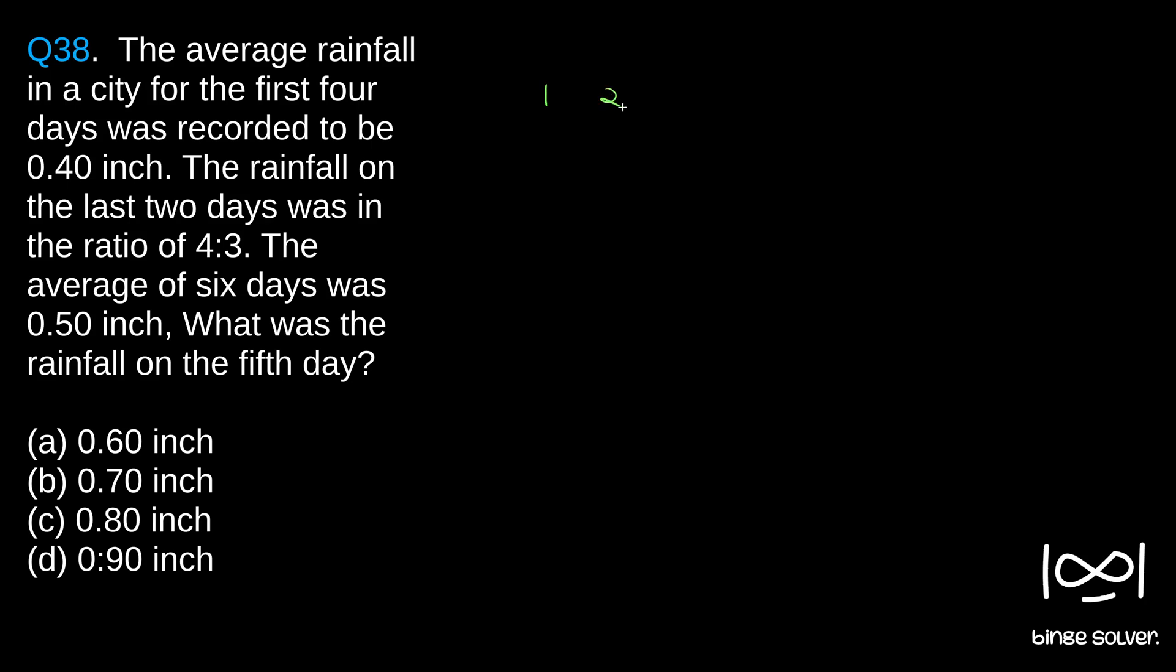So we have six days: 1, 2, 3, 4, 5, 6. The average rainfall in the first four days was given as 0.4 inch. So the total rain that fell in all these days can be calculated as 0.4 into 4, which is 1.6 inch.